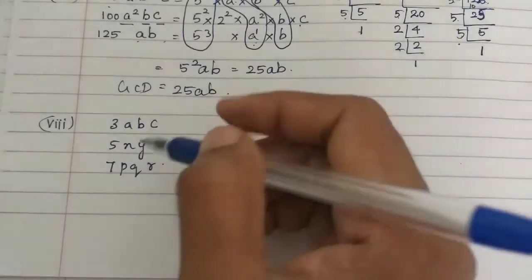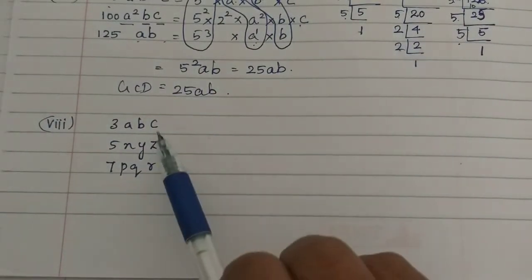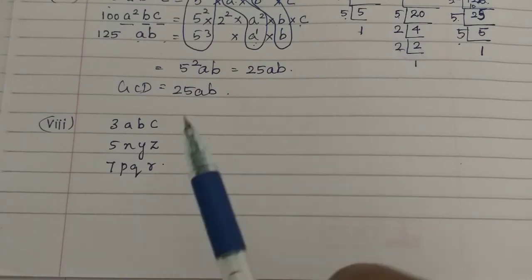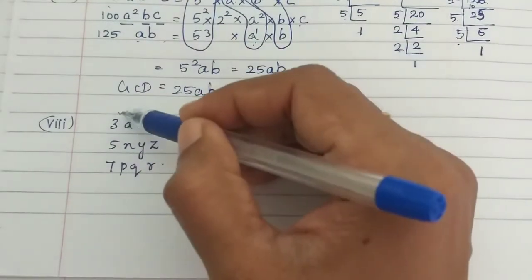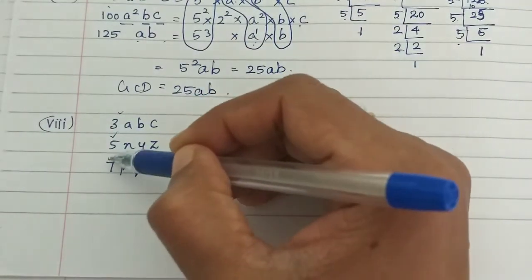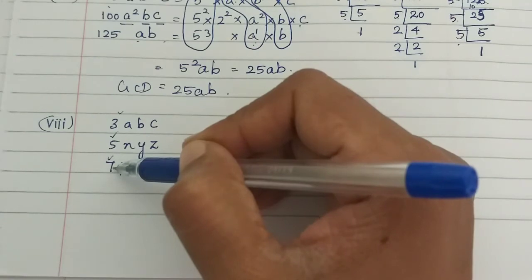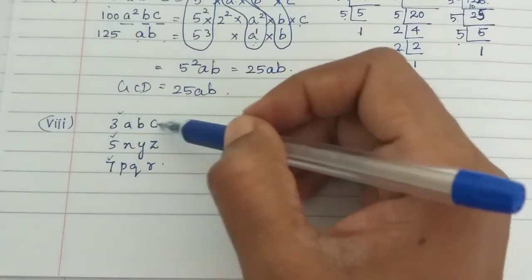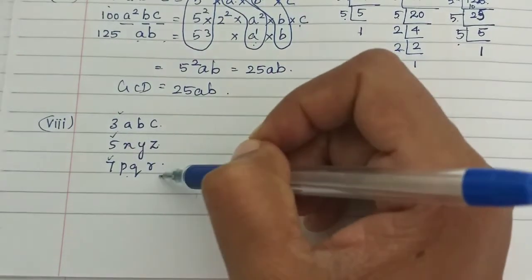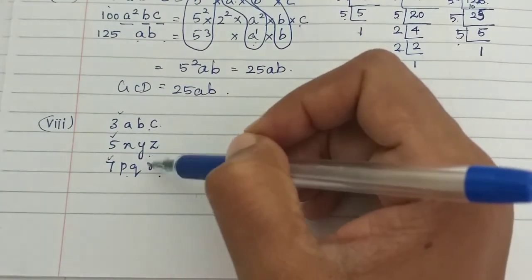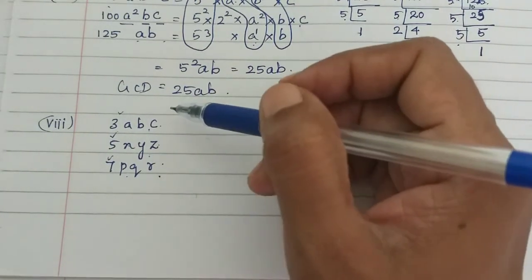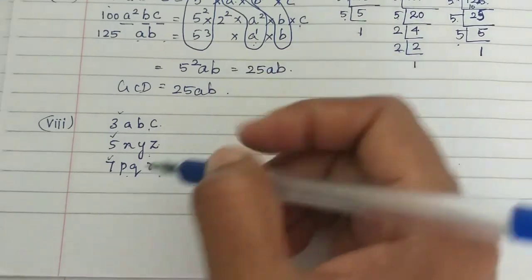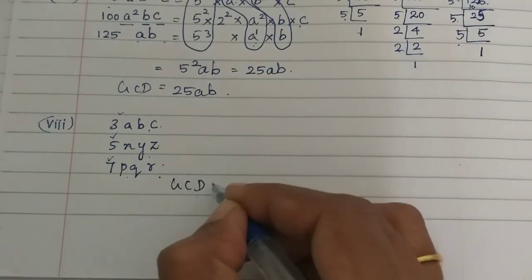The next subdivision: 3abc, 5xyz, and 7pqr. The numbers 3, 5, and 7 are all prime numbers. If we factorize them, they will not have common factors. The variables a, b, c, x, y, z, p, q, r — in each term there are no common variables across all three polynomials. So there is no common term, and therefore the GCD is 1.